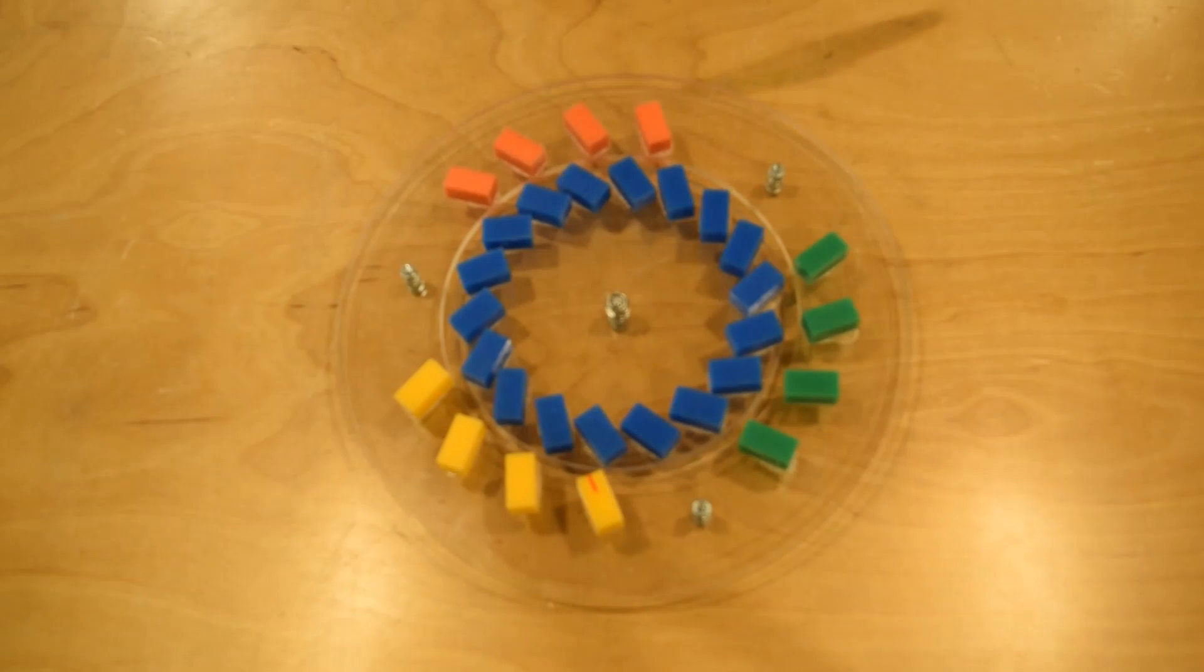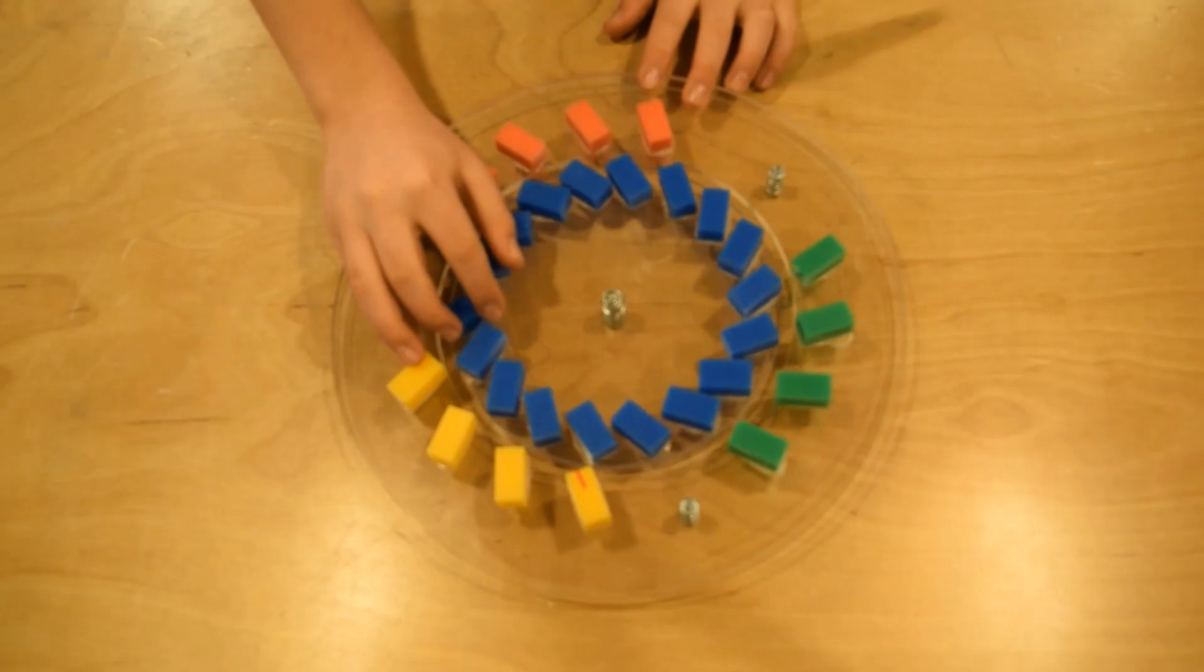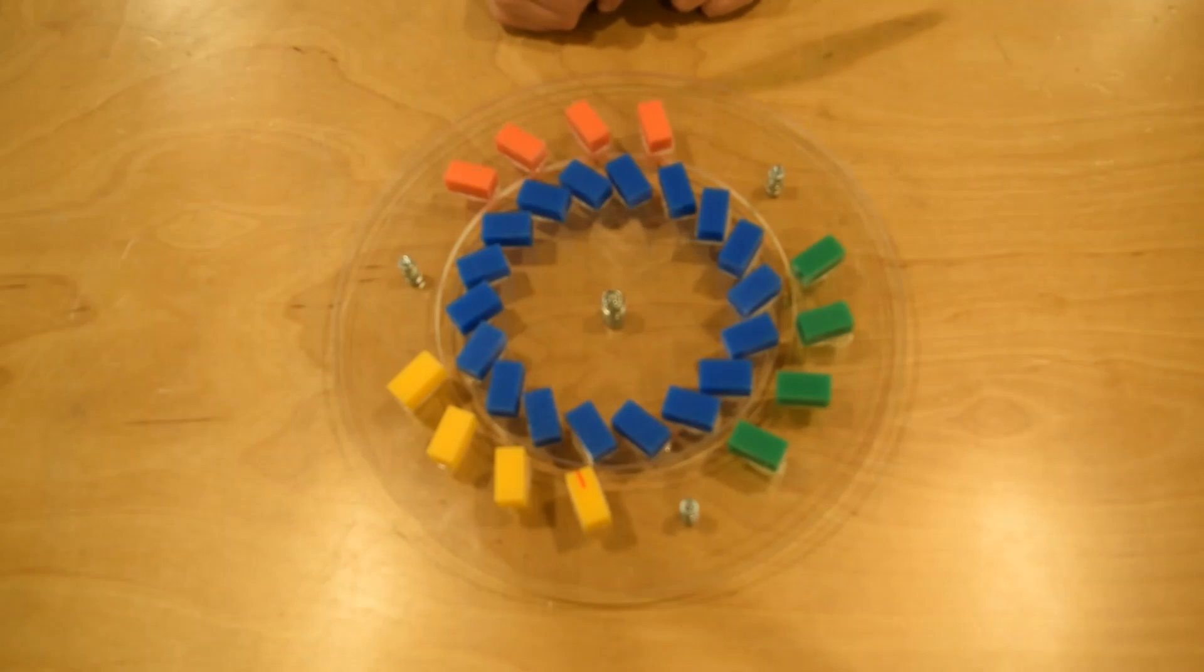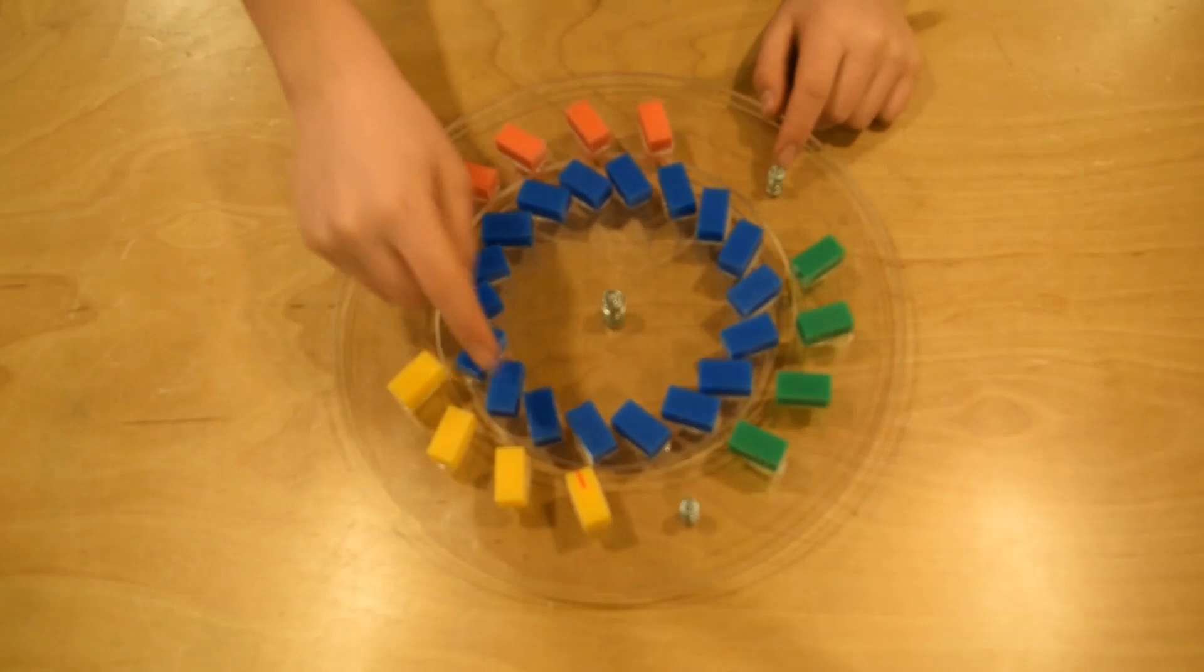We made a prototype made out of plastic to help you understand better. These are not magnets. This is the rotor. It has 18 magnets. There are three sets of stator magnets: red, green, and yellow.